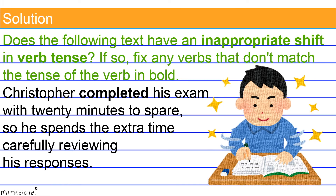Alright, back to the original question — now for the solution. Look at the verb in bold: 'completed.' It is in the past tense. However, notice that the second verb, 'spends,' is written as a simple, singular, third person, present tense verb form. There is no need to reflect a time change, so this is an inappropriate shift in verb tense.